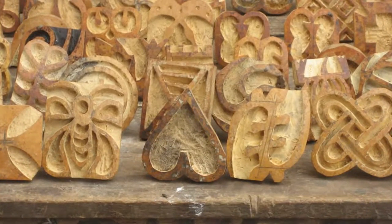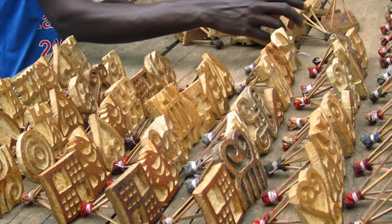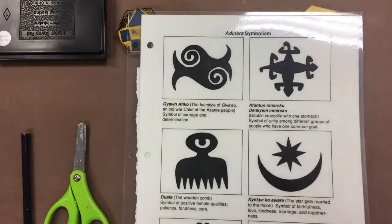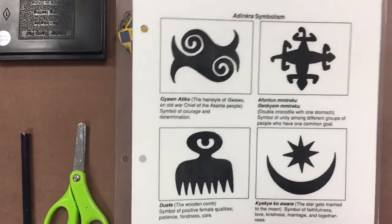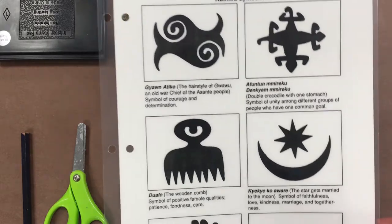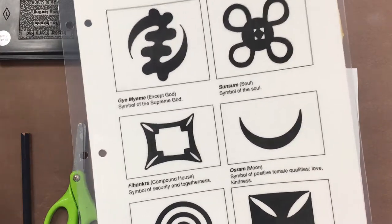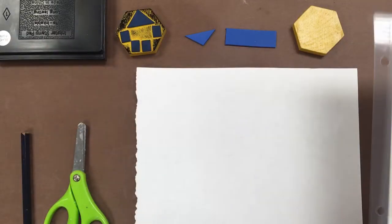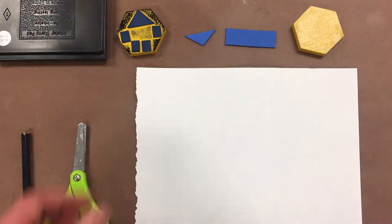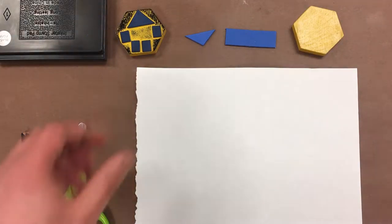Dinkra stamps are usually carved from calabash gourds. The stamps have various symbols that would be meaningful and mean something to the person who wears it. So we have all these different symbols here that you can look at to get an idea, and you can also make your own.